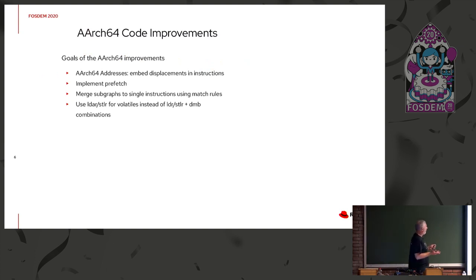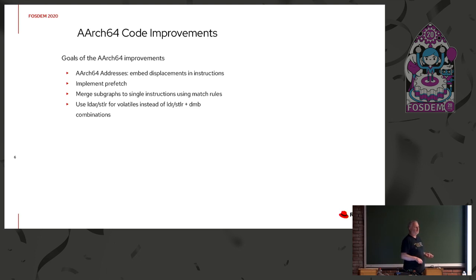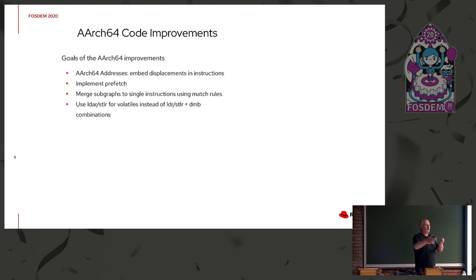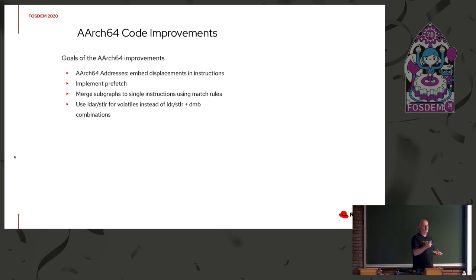For the ARM64 code, what we wanted to do was add very basic stuff. Two and a half years ago there was very minimal support - things like addressing with no displacements embedded, they were loaded as independent values into registers. There was no pre-fetching. Things like merging an abstract shift and a mask operation using one of the bit-fetch instructions in ARM - we wanted optimizations like that. The most important was using load-acquire/store-release for volatile operations rather than having memory barriers, for efficiency.